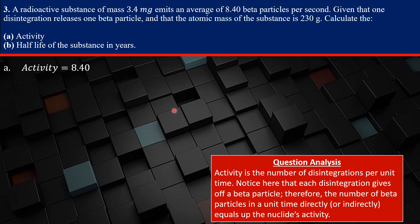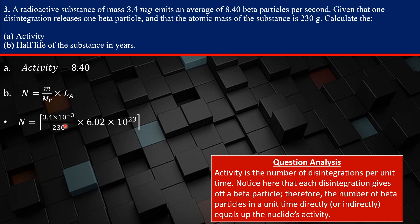So we know the activity is 8.40. Now the next part is we have to find the half-life of the substance in years. To do that, we have to find the number of particles available in that sample. How do I get the number of particles? Well, using chemistry: mass divided by molar mass, multiplied by Avogadro's number. So plugging in — mass is 3.4 milligrams, molar mass is 230. Then we get N, the number of particles. The activity is lambda, the decay constant, multiplied by the number of particles.